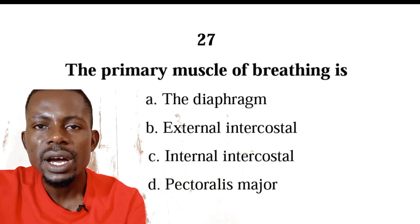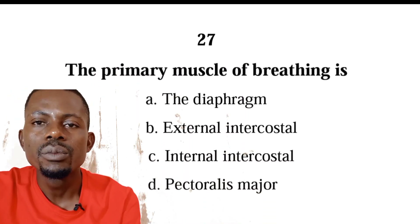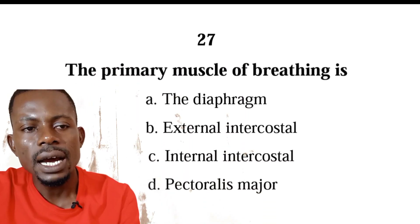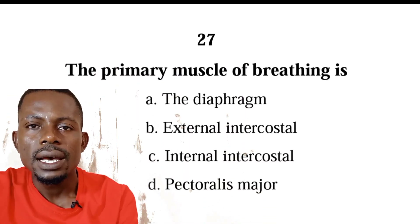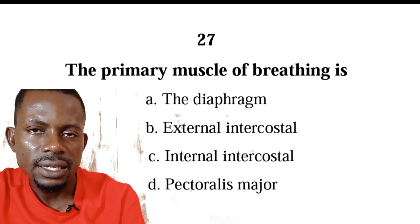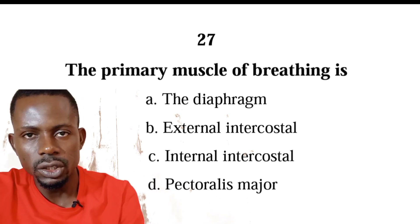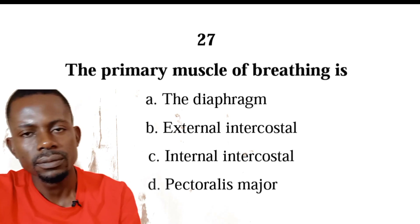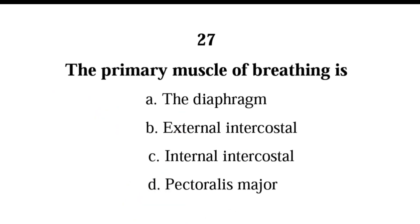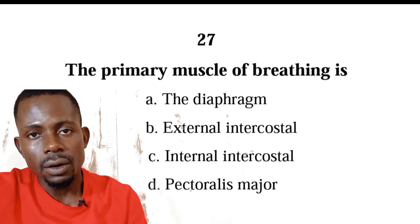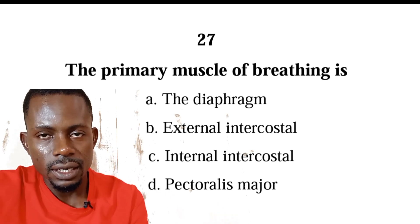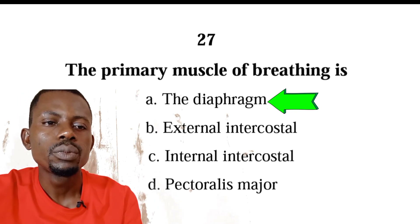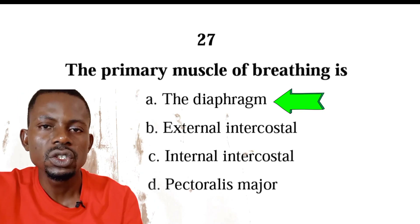Number twenty-seven: the primary muscle of breathing is the diaphragm, external intercostal, internal intercostal, or pectoralis major? The correct answer is A, diaphragm. The diaphragm is the primary muscle of breathing.